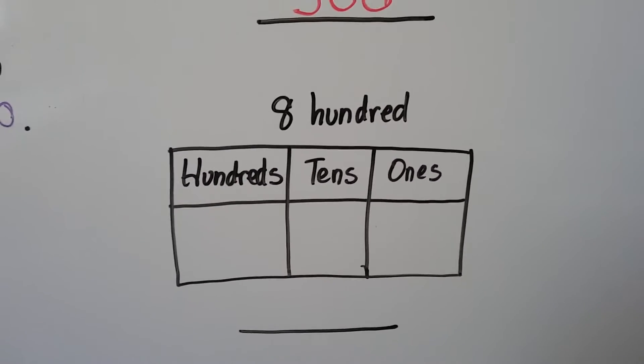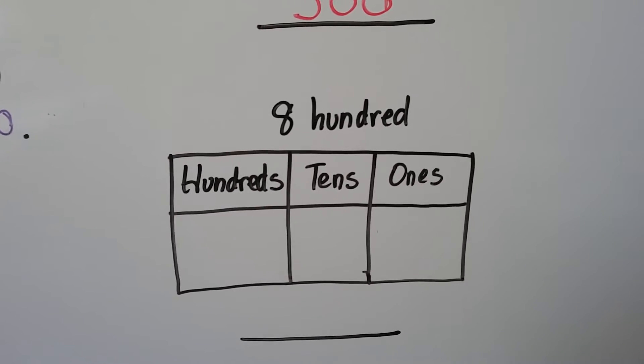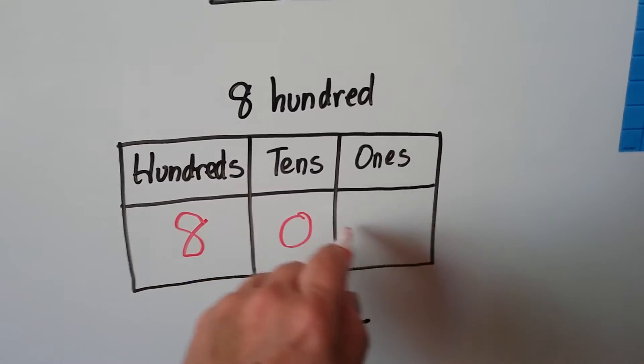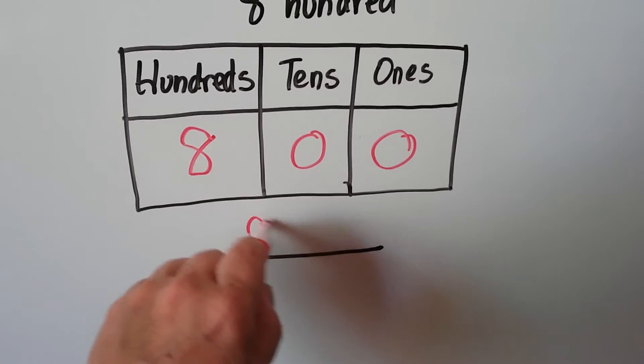800. 100, 200, 300, 400, 500, 600, 700, 800. There's an 8 in the hundreds place, a 0 in the tens place, and a 0 in the ones place. And it's written as 800.